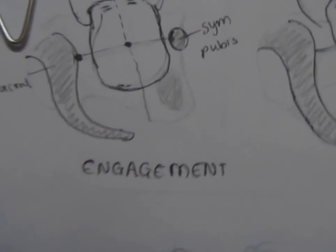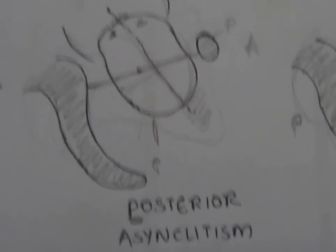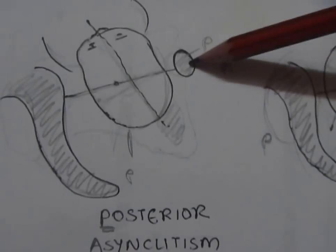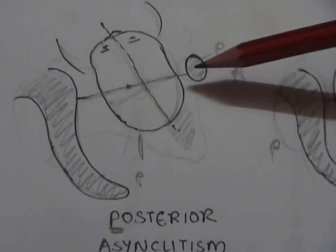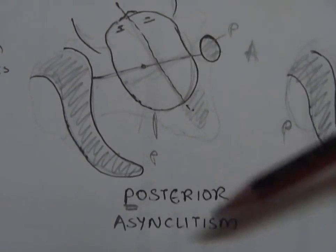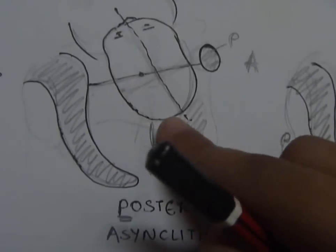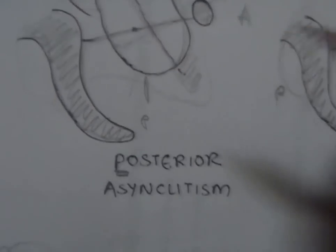Now posterior asynclitism is in which the sagittal suture lies closer to the pubic symphysis, and then when you do a vaginal examination to palpate for the presenting part, the posterior parietal bone presents.